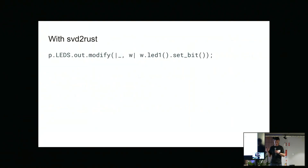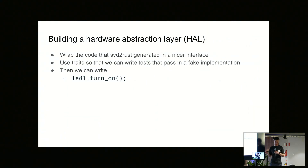SVD to Rust generates this code for us and lets us write something like just setting the bit directly — we don't need to define a constant because it's all in the generated code. It's still a little verbose though, so the next thing we do is create a hardware abstraction layer which wraps around this low-level generated code and provides a nicer interface. We can then just write something like led1.turn_on(), and we might put this behind a trait so we can have two implementations — one for real hardware and one for tests that mocks the hardware.